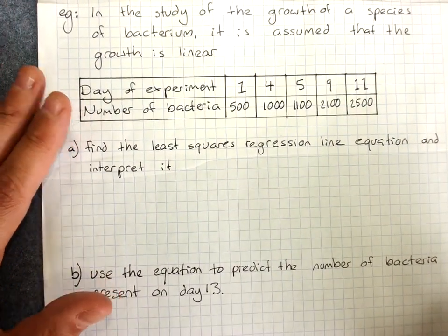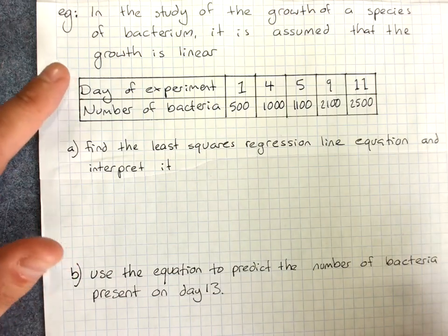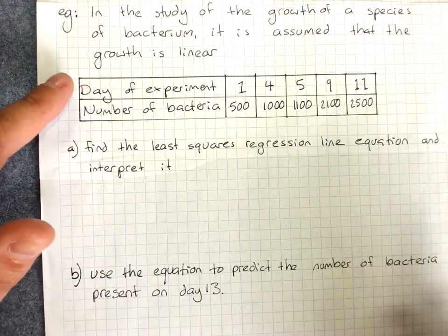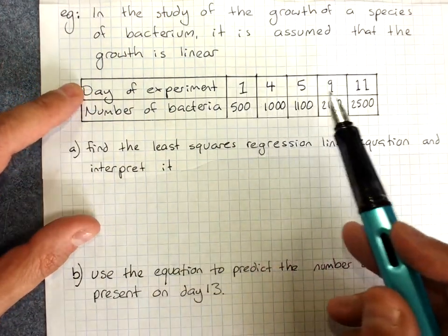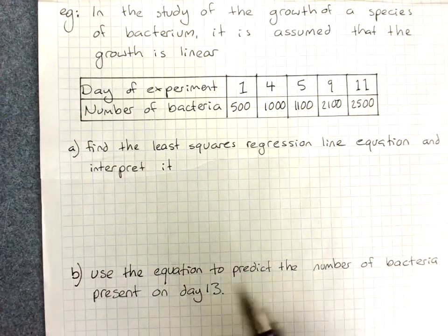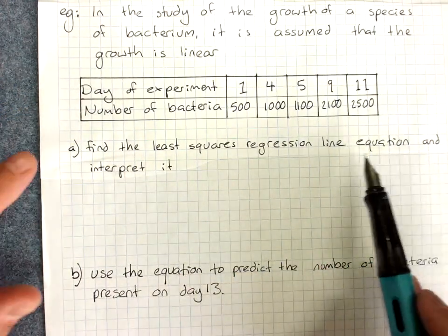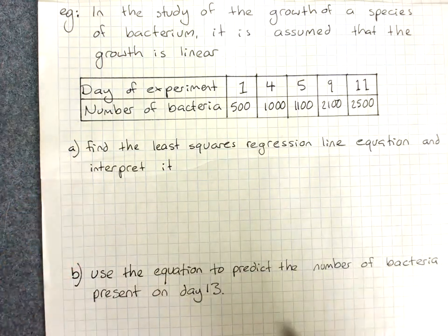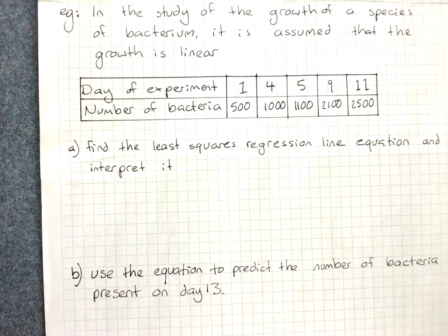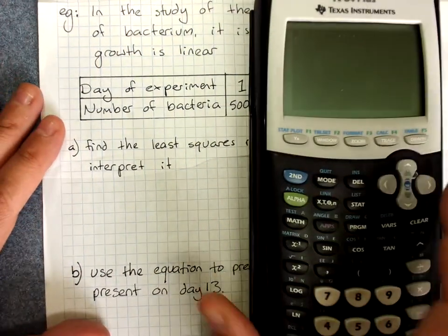So here is our example. In the study of the growth of a species of bacterium, we are assuming that the growth is linear, and over the days of the experiment, we are measuring the number of bacteria present. Find the least squares regression line equation and interpret it. So, remember, our least squares line.